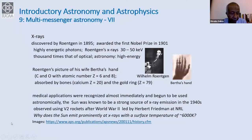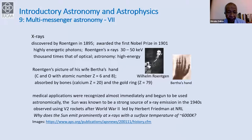Let's look at how this came about and what are the physical processes. X-rays were discovered rather serendipitously by William Röntgen while he was experimenting with cathode ray tubes. Röntgen's rays were typically in the range of 30 to 50 kilo electron volts. So these are highly energetic photons, thousands of times more energetic than optical. Basically, X-rays represent high energy astrophysics. A famous picture of Röntgen is his wife's hand wearing a wedding ring.